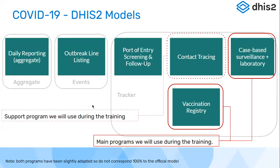The COVID-19 packages for DHIS2 had the following models available. Packages were released in discussion with the team at WHO Geneva, based on COVID reporting guidelines. There was an aggregate package with daily reporting forms for COVID cases, and an events package for outbreak line listing. If a country did not have resources to track individual COVID cases, they had the option to maintain a consolidated line list of person details and outcomes at the end of 14 days. There was also a port of entry screening and follow-up package.